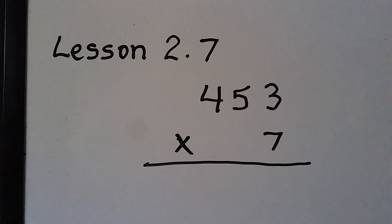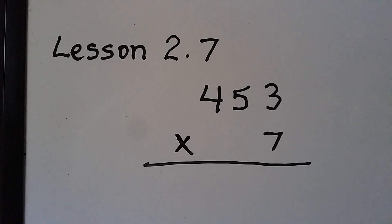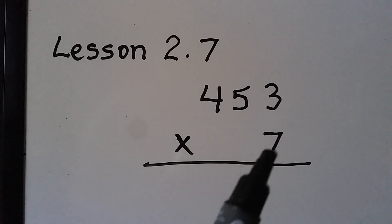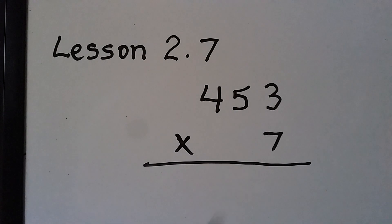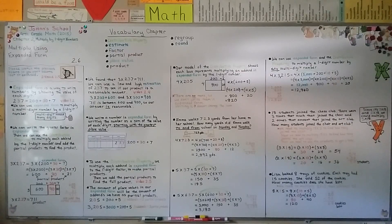In our next lesson, 2.7, we're going to use place value and partial products to multiply by a one-digit number. I hope you're doing well — see you next time!